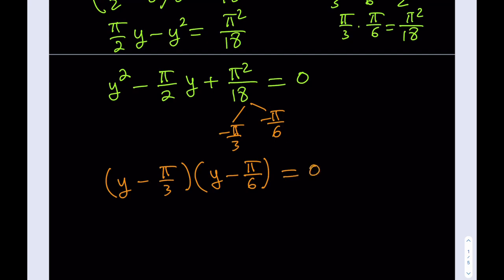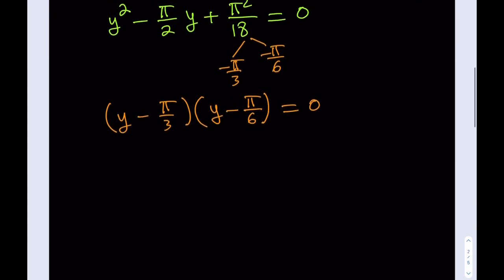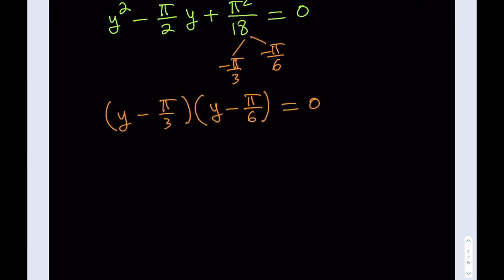Awesome. Now can we solve this? Absolutely. By using the zero product property, set each factor equal to 0, and you get y equals pi over 3, and y equals pi over 6. We were able to find the value of y — but we're not looking for y.